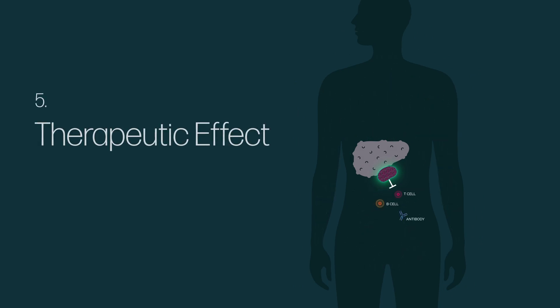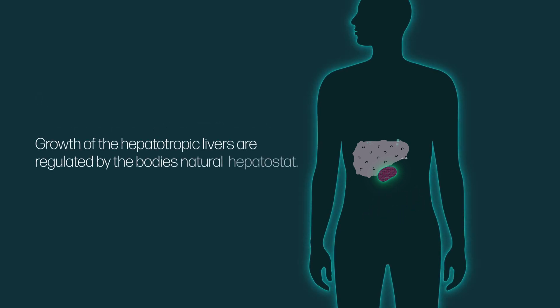As the livers grow and help the end-stage liver disease, patients will require immunosuppressive drugs after engraftment to prevent the immune system from rejecting their new ectopic livers. Growth of the ectopic livers are regulated by the body's natural hepatostat, regulating the amount of liver tissue that the body needs to be healthy.